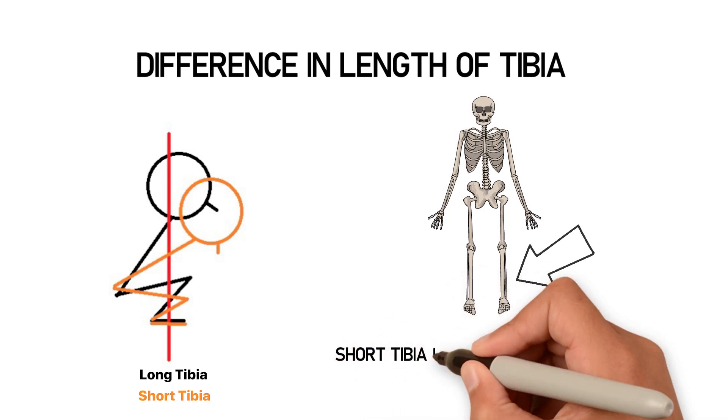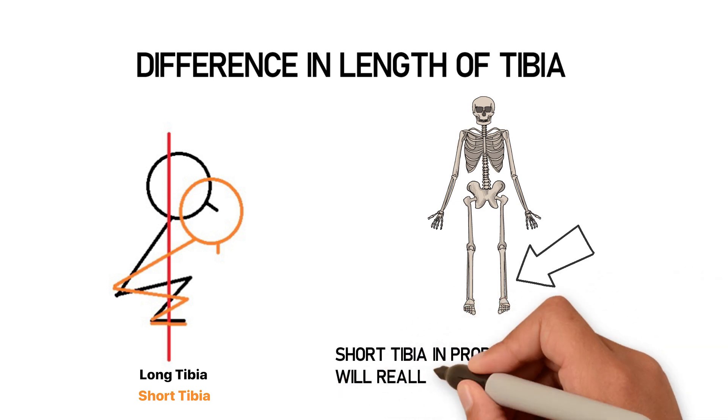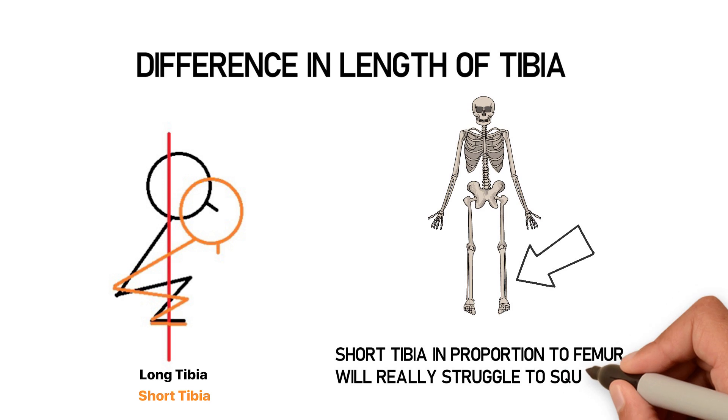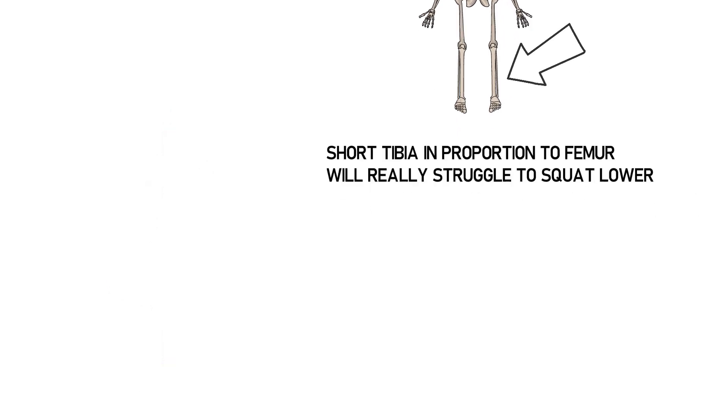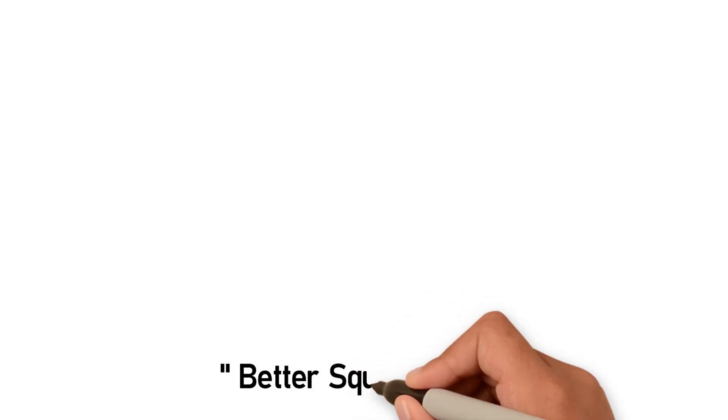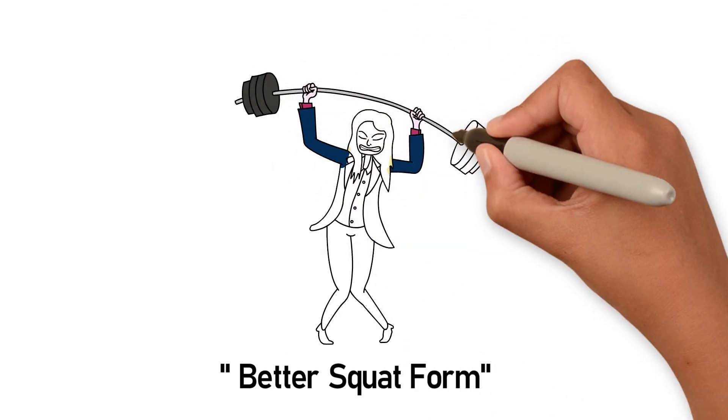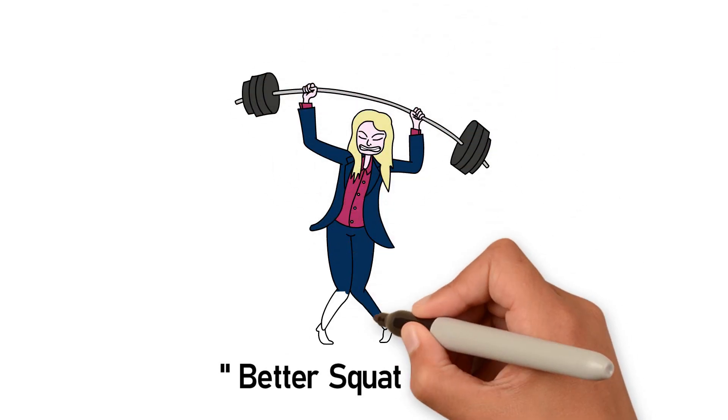People with short tibia in proportion to femur will really struggle with lowering their squat and might find that squat really loads the back. And if they try to straighten their back to try to have the so-called better squat form, they would physically fall backwards as they are not able to maintain the center of mass over their feet in order to stay balanced.